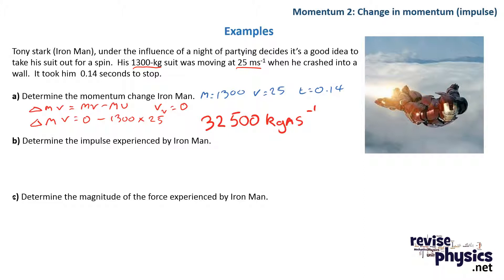Part B says determine the impulse. Well, the impulse is just change in momentum, which is change in MV, or force times time. We worked out a change in momentum in Part A, so our impulse is just MV, which is our change in momentum from before.